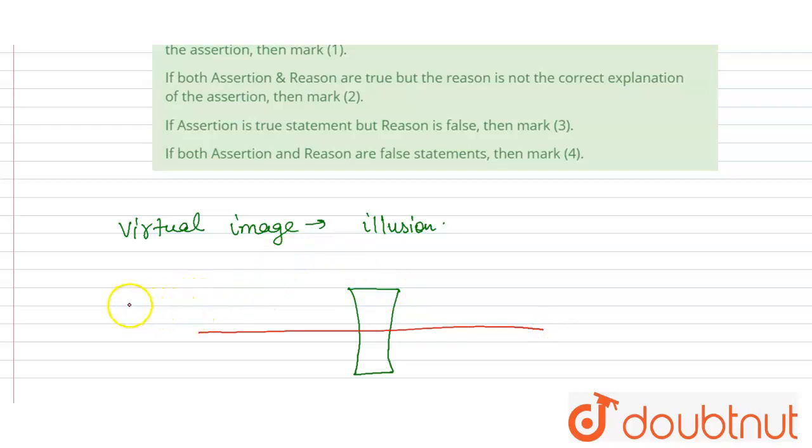So if an object is at an infinite distance, then the rays will come parallel to the principal axis and they will diverge like this, and similarly here they will diverge like this. So they will never meet in the future.